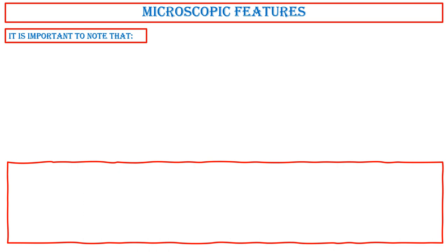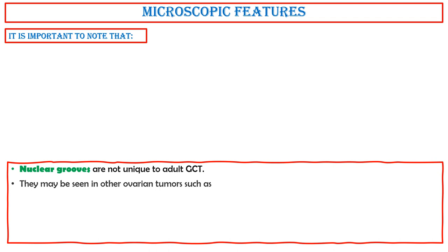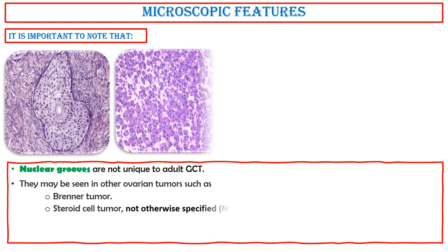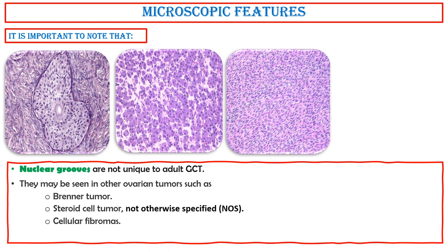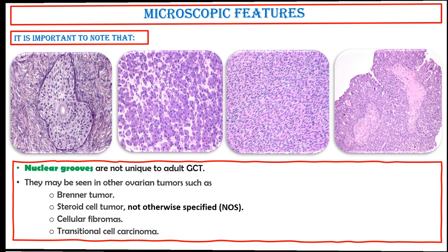It is important to note that nuclear grooves are not unique to adult granulosa cell tumors. They may be seen in other ovarian tumors such as Brenner tumor, steroid cell tumor not otherwise specified, cellular fibromas, and transitional cell carcinoma.